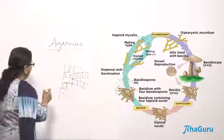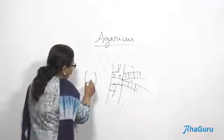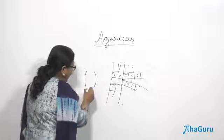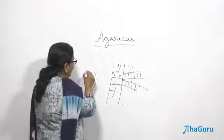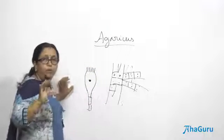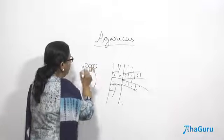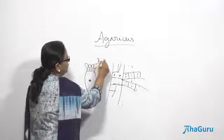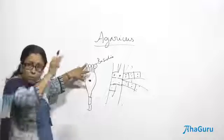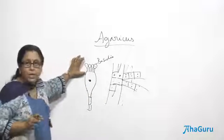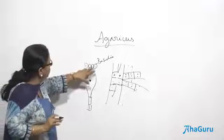The gills carry structures called basidia. Many basidia are present on the gills inside the Basidiocarp, and they are produced by the dikaryotic mycelium. Inside the basidium, karyogamy happens, forming the zygotic nucleus. The zygotic nucleus undergoes meiosis to produce 4 nuclei, and all 4 haploid nuclei move into spores — these are known as Basidiospores. The difference between ascospores and Basidiospores: ascospores are produced inside the ascus, but Basidiospores are on the outside of the basidium. Basidiospores are 4 per basidium, while ascospores are 8 per ascus, but both are haploid.